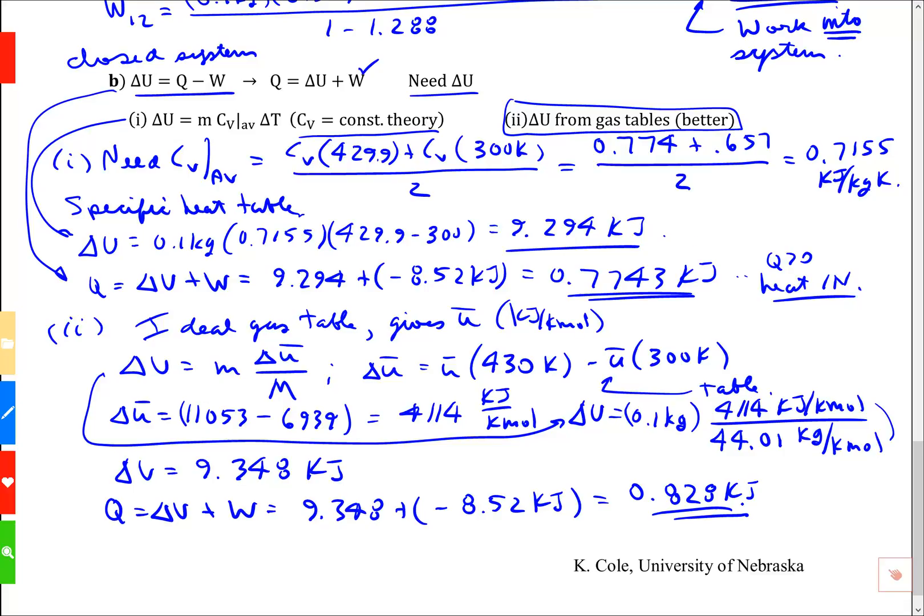The heat for part little i was 0.77 and the heat for 2i was 0.828 from the tables. This is heat into the gas. This is more precise. There's a difference.